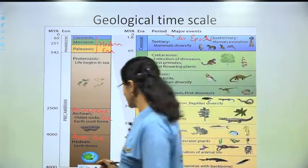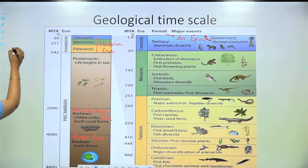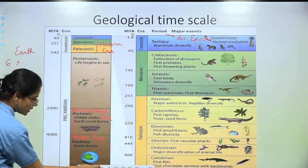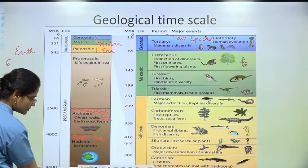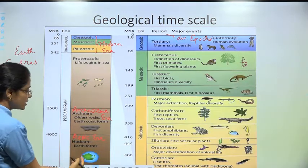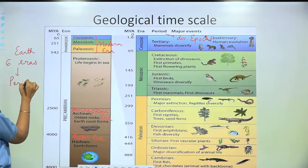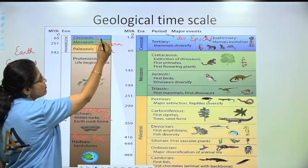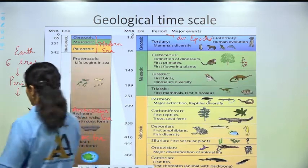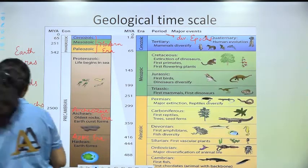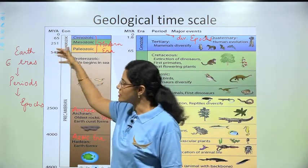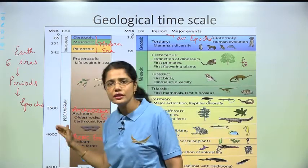To summarize in a simpler form: the history of the Earth is divided into six eras. These six eras are further divided into periods. Out of these, we will discuss the three modern eras. And periods are further divided into epochs. Remember: eras → periods → epochs.